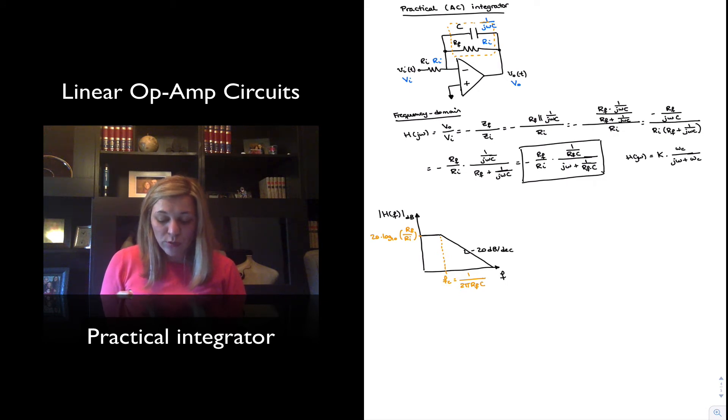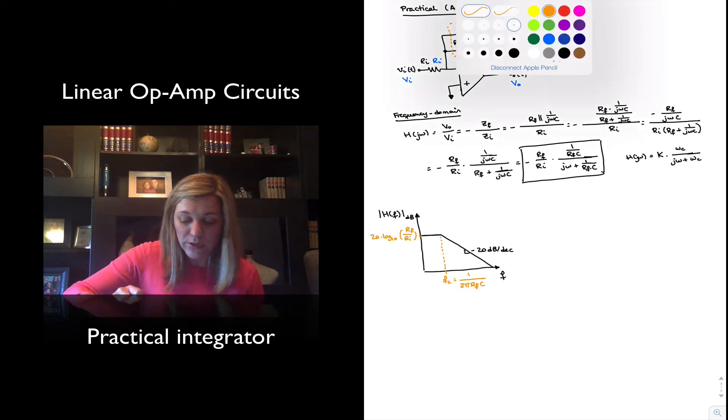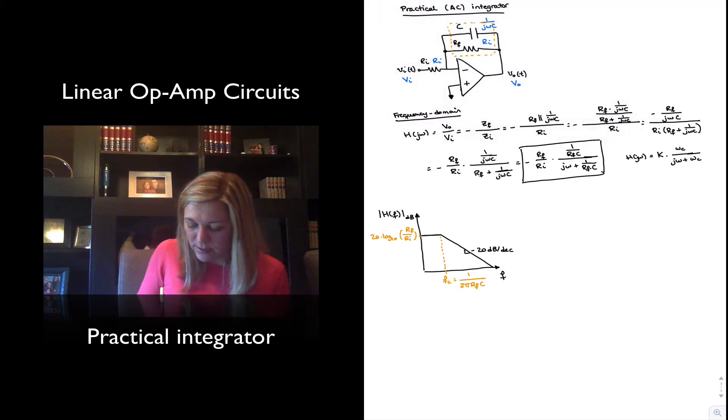Now, notice that this magnitude response resembles the one of the ideal integrator for frequencies greater than the corner frequency. If you recall, the magnitude of the ideal integrator looks something like this, where it just kept going, it never became flat because it didn't have any poles other than the pole at 0.